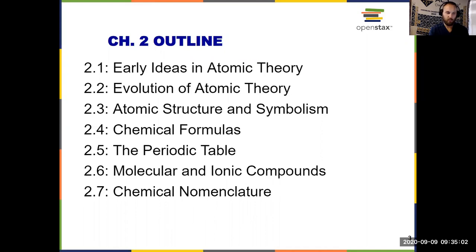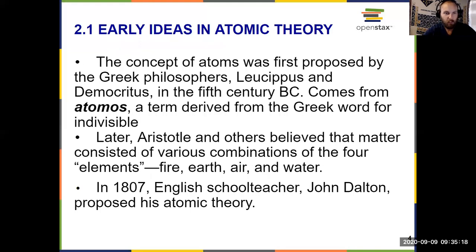Some of these ideas will seem like review. Some of them overlap with chapter one, but in other places in this chapter we may start to get new ideas from what you've seen in chemistry in the past. So let's jump into 2.1: early ideas in atomic theory. This brings us to how the atom was first conceptualized — they've always existed, but how the idea came to be.